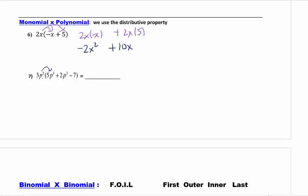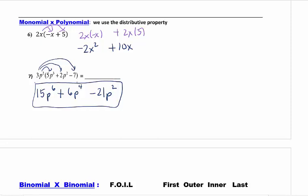So I'm going to do number 7, same thing. 3 times 5 is 15. Add my exponents for my p, so I get p to the 6th. Go to my second term. 2 times 3 is 6. I get 2 plus 2 for my exponents, so that gives me p to the 4th. Negative 21 p squared. If in the original problem you couldn't add anything inside the parentheses, your final answer you should not be able to add anything as well.